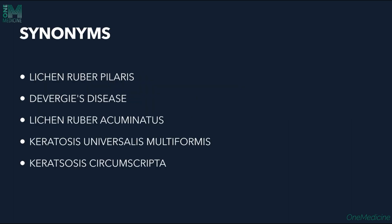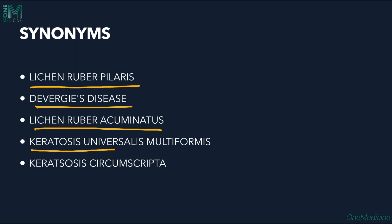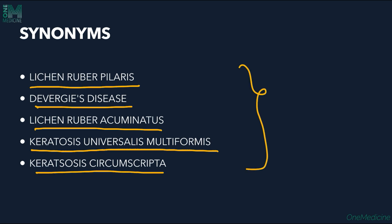The synonyms for PRP are lichen rubra pilaris, Devergie's disease, lichen rubra acuminatus, keratosis universalis multiformis, and keratosis circumscripta. These are the other names by which PRP is called.